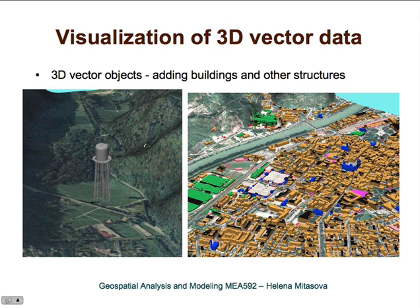Another example is visualization of three-dimensional vector data. Today, almost any current GIS system allows you to bring in data from CAD applications and display different structures. In this example, a structure was imported from DXF from a CAD system, where buildings are colored according to their use and were created in GIS by extruding them based on their elevation from the footprint. Some of these, like churches, have a full three-dimensional CAD representation.